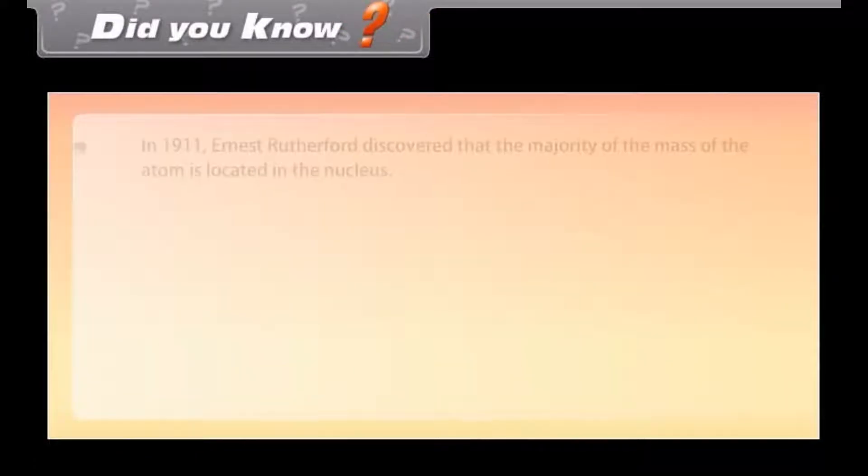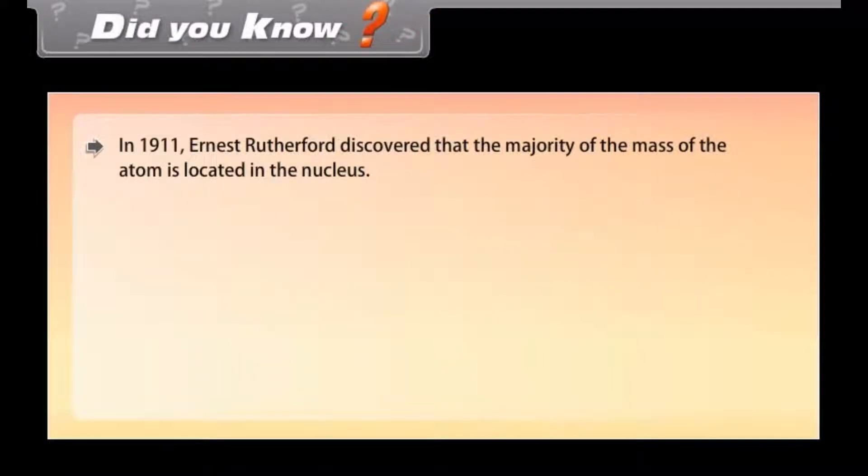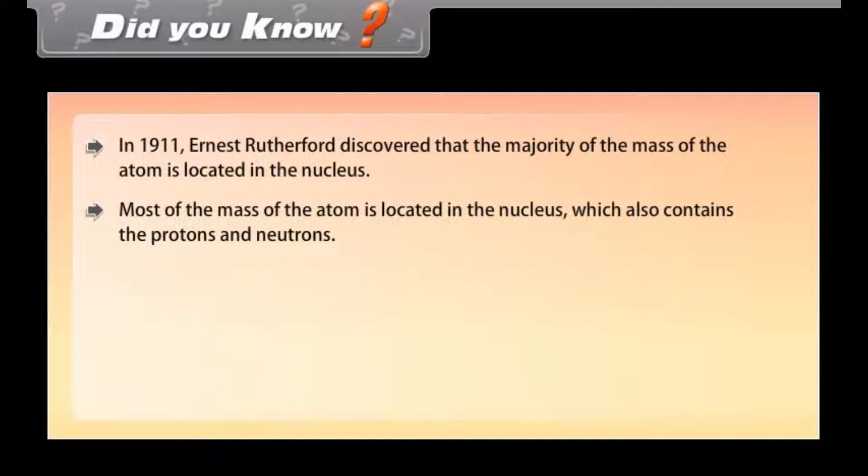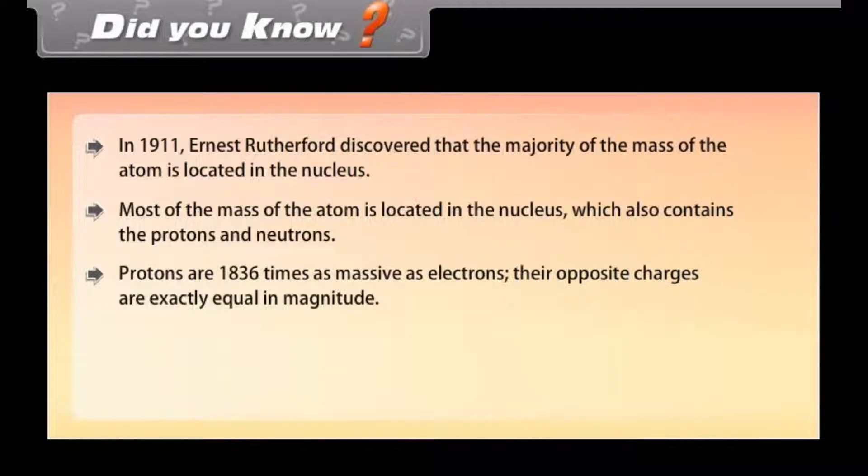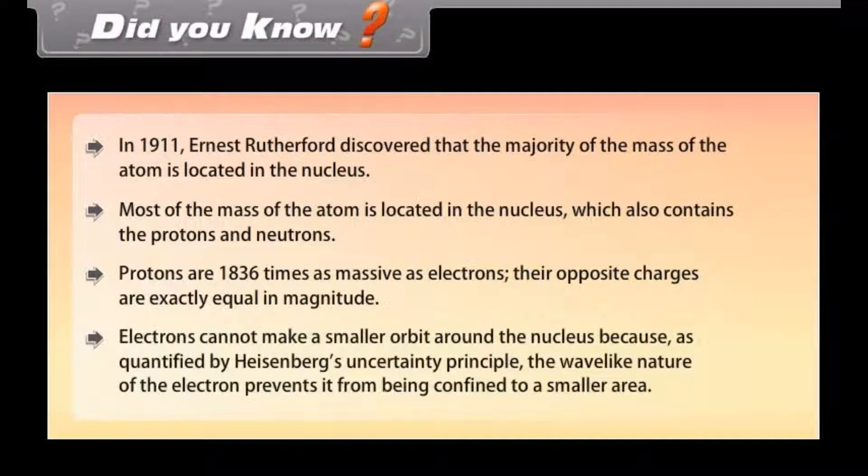Did you know, in 1911, Ernest Rutherford discovered that the majority of the mass of the atom is located in the nucleus. Most of the mass of the atom is located in the nucleus, which also contains the protons and neutrons. Protons are 1836 times as massive as electrons. Their positive charges are exactly equal in magnitude. Electrons cannot make a smaller orbit around the nucleus because as quantified by Heisenberg's uncertainty principle, the wave-like nature of the electron prevents it from being confined to a smaller area.